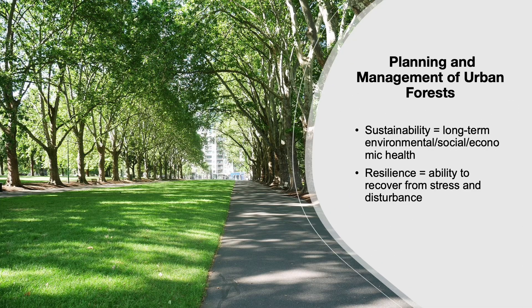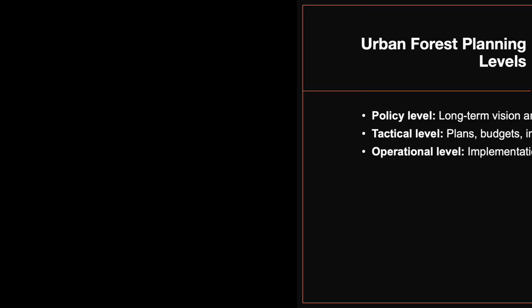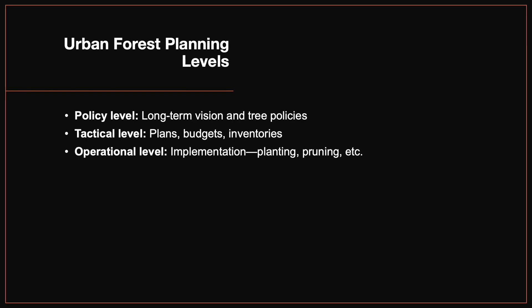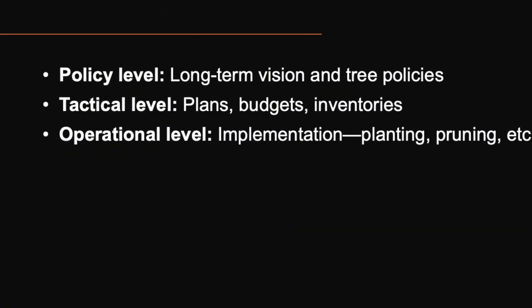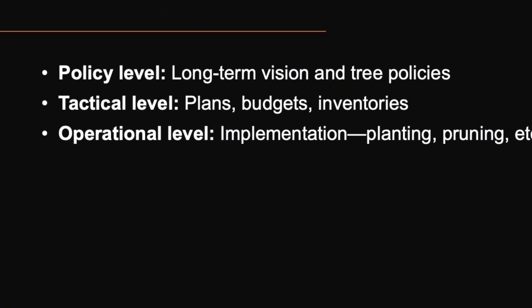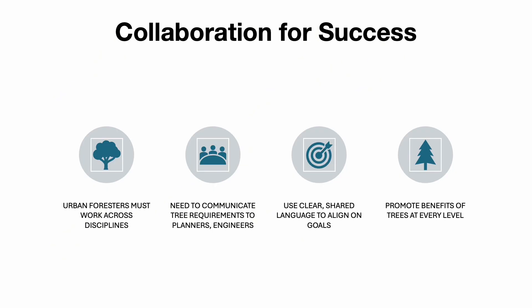Urban forests contribute to city sustainability and resilience. Sustainability means long-term benefits can be maintained; resilience means the system can recover from stress. Urban forestry planning happens at three levels: at the policy level, long-term goals and tree preservation plans are established; at the tactical level, budgets, inventories, and programs are developed; at the operational level, fieldwork like planting, pruning, and removals are carried out. Urban foresters must work with city planners, engineers, business owners, and residents, as each stakeholder has different priorities. It's crucial to communicate clearly about space requirements for trees and to advocate for their value in policy and practice.